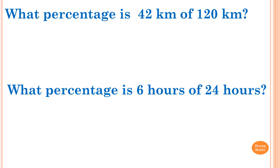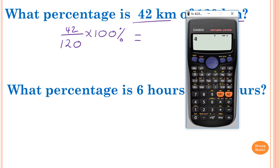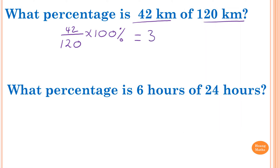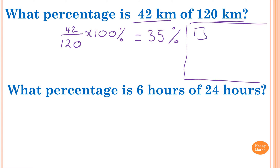The first practice question: what percentage is 42 kilometers of 120 kilometers? Remember, they're all the same units so we don't have to convert anything. Just go 42 over 120 times by 100, which equals 42 divided by 120 times 100, giving 35 percent. Now remember how to interpret this question: it means that a percentage times 120 will give me 42.